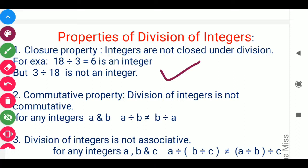Moving to commutative property: division of integers is not commutative. For any integers, a divided by b is never going to be equal to b divided by a, so commutative property again fails for division.